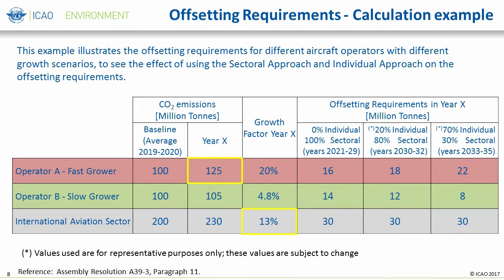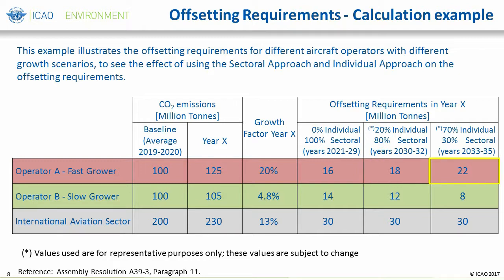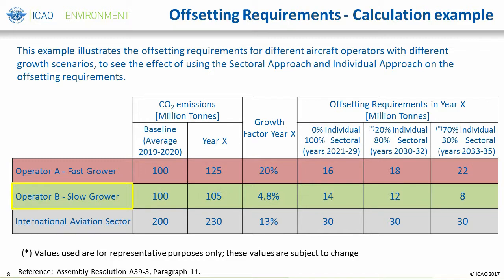Under the 80% sectoral approach and 20% individual approach, Operator A's offsetting requirements are 18 million tons of CO2, which is the weighted average from 80% of 16 million tons and 20% of 25 million tons. Under the 30% sectoral approach and 70% individual approach, Operator A's offsetting requirements are 22 million tons of CO2, which is the weighted average from 30% of 16 million tons and 70% of 25 million tons. So as the higher percent share of the individual approach is introduced for the later periods, the offsetting requirements of Operator A get closer to its actual emissions increase.